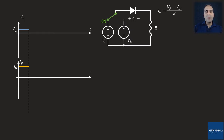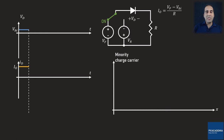I also want to plot the minority charge carrier diagram. This plot is important since by using it, I can more effectively illustrate how the transition from the on to off state takes place. Under the forward bias, we have an extra accumulation of minority charge carriers at the edges of the depletion region, and by moving outward from the depletion region edges, the concentration exponentially reduces until it merges at PN0 and NP0.